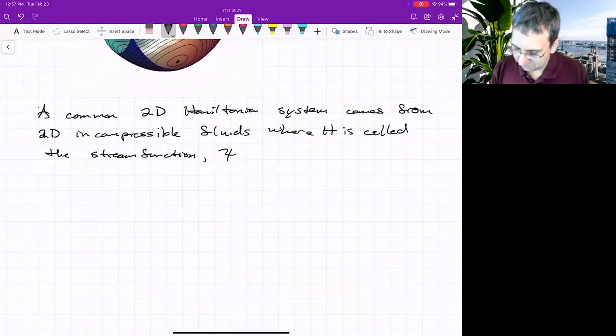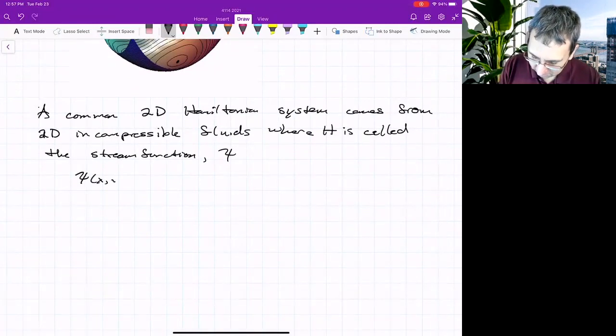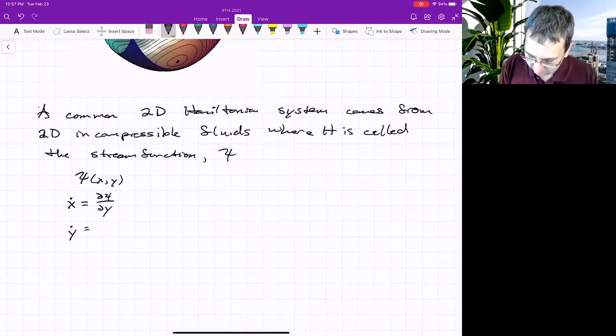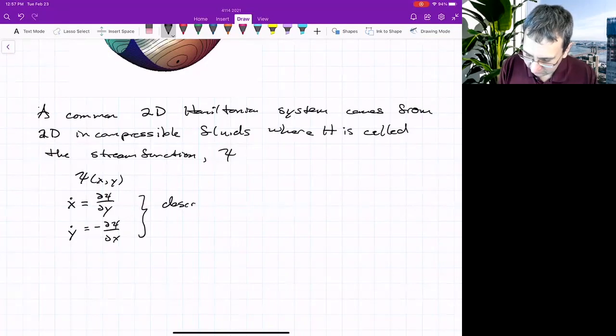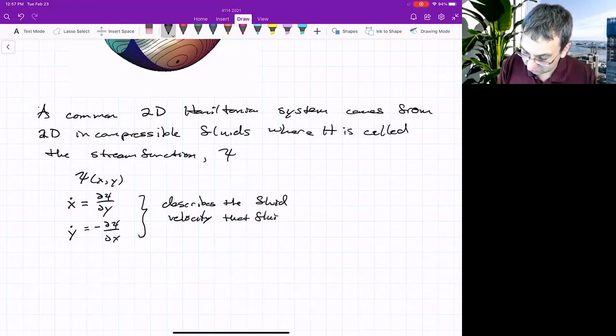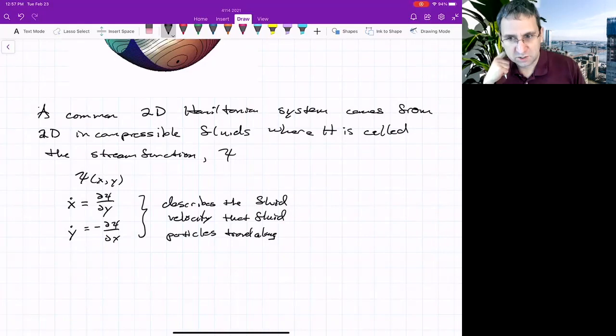So if we have psi is some function of x and y, x dot is partial psi partial y, and y dot is negative partial psi partial x. And this describes the fluid velocity that fluid particles take.